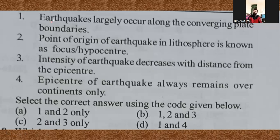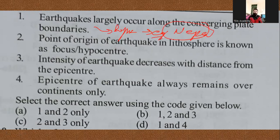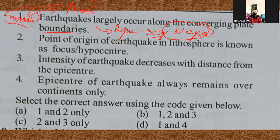The next question asks for the correct statements. The first statement says earthquakes largely occur along converging plate boundaries — this is exactly right. You can take the example of Nepal earthquakes, where earthquakes occur because the Indian plate and the Eurasian plate are converging. That's also the biggest reason for mountain formation there. The second point states that the point of origin of the earthquake in the lithosphere is known as focus or hypocenter — perfectly right. If it's on the surface of the Earth, then it is the epicenter.